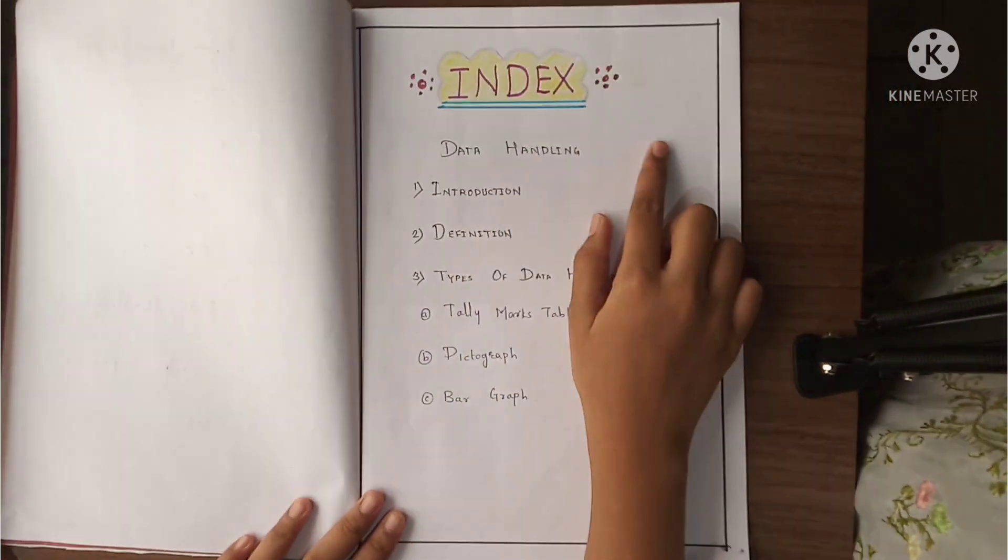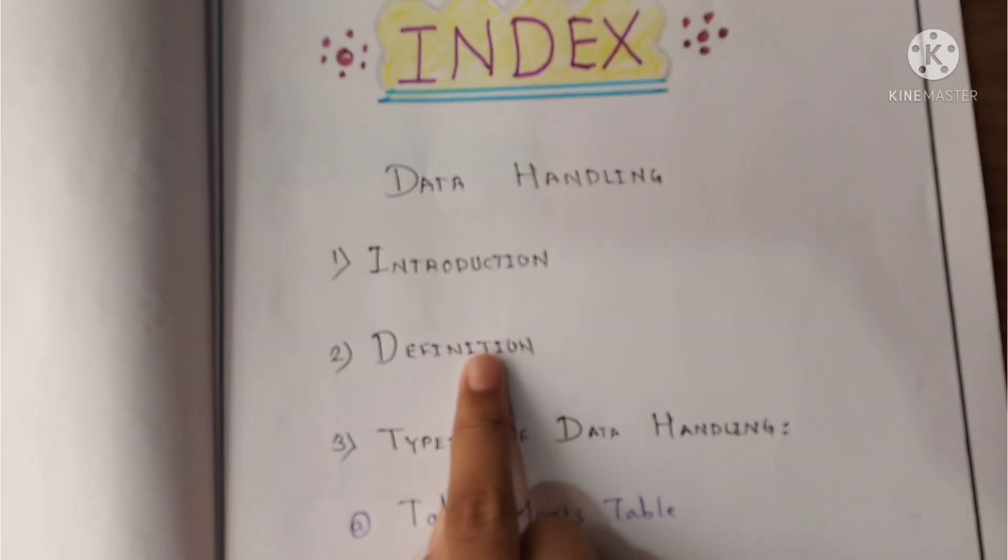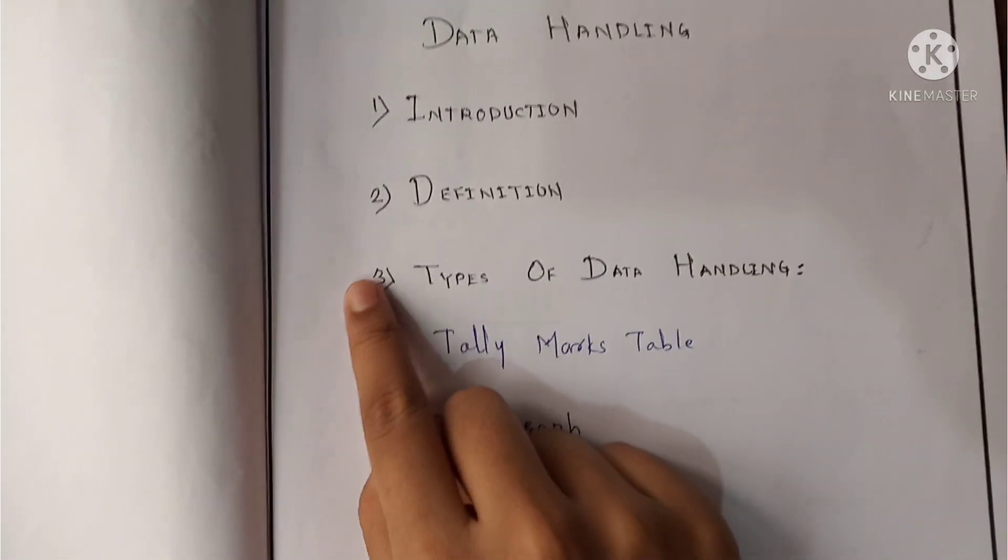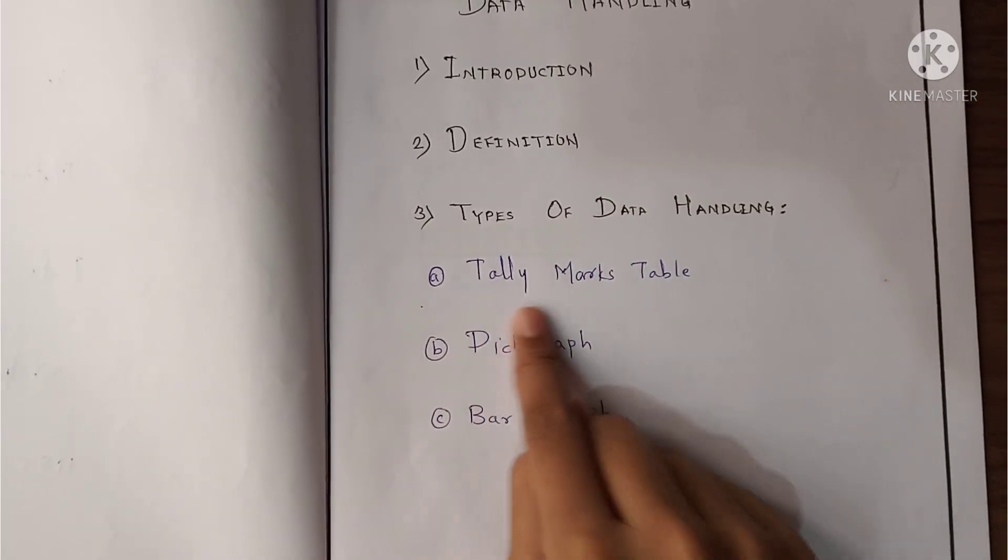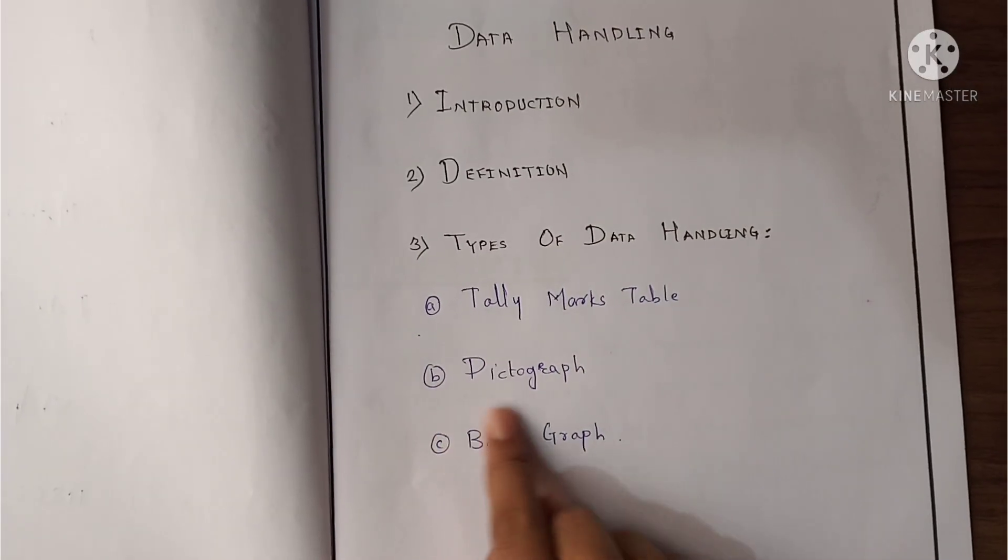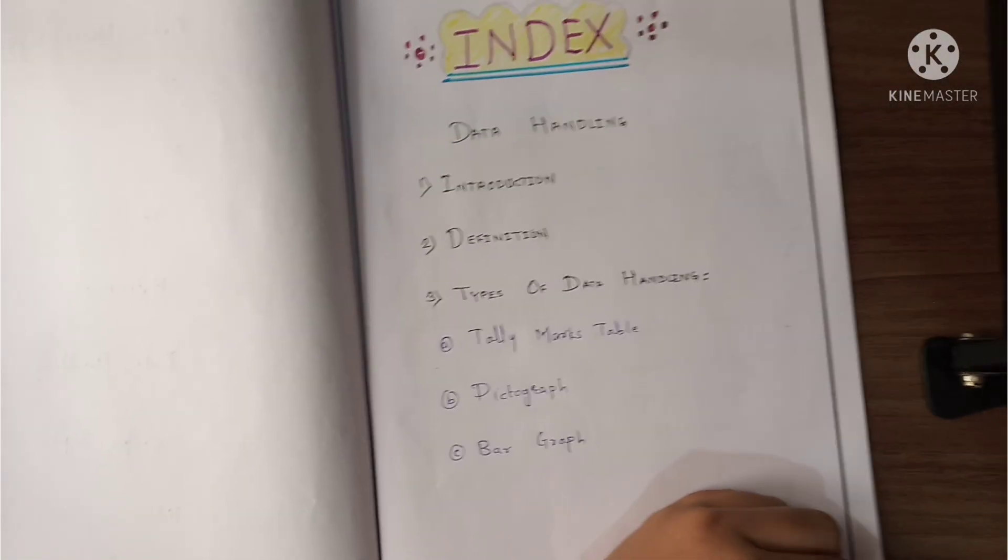Here is the index. Data handling: first is introduction, second is definition, third is types of data handling. A number, tally marks table, B pictograph, C bar graph. Now let's see the first thing.